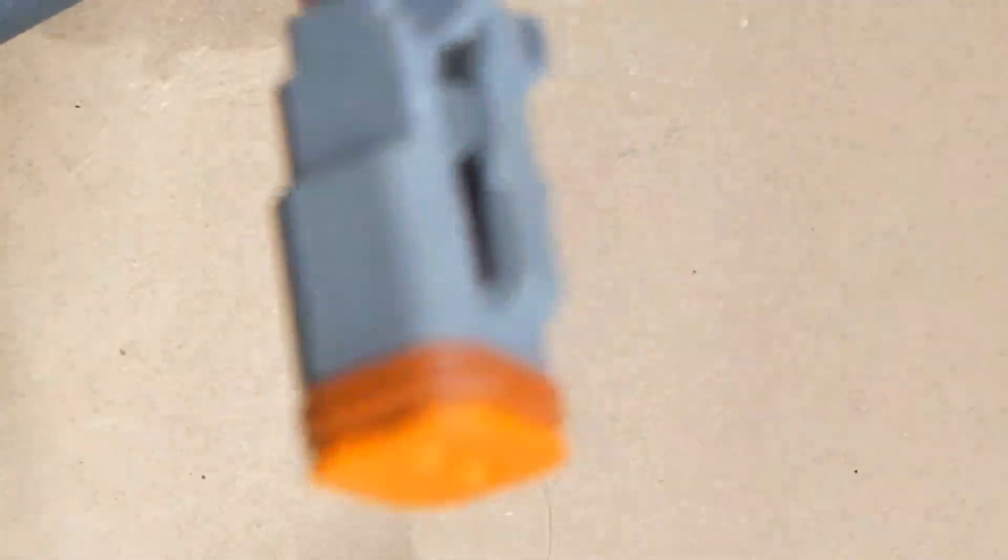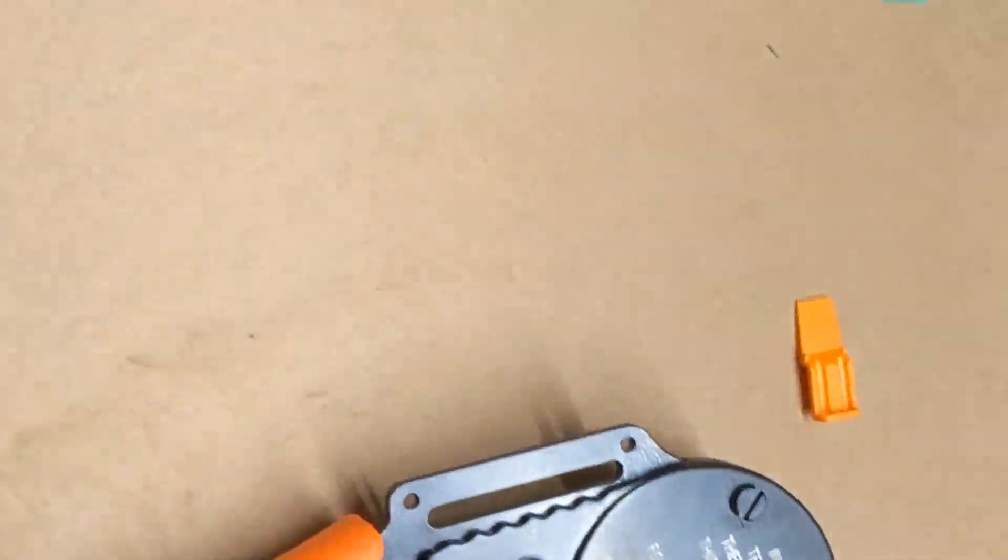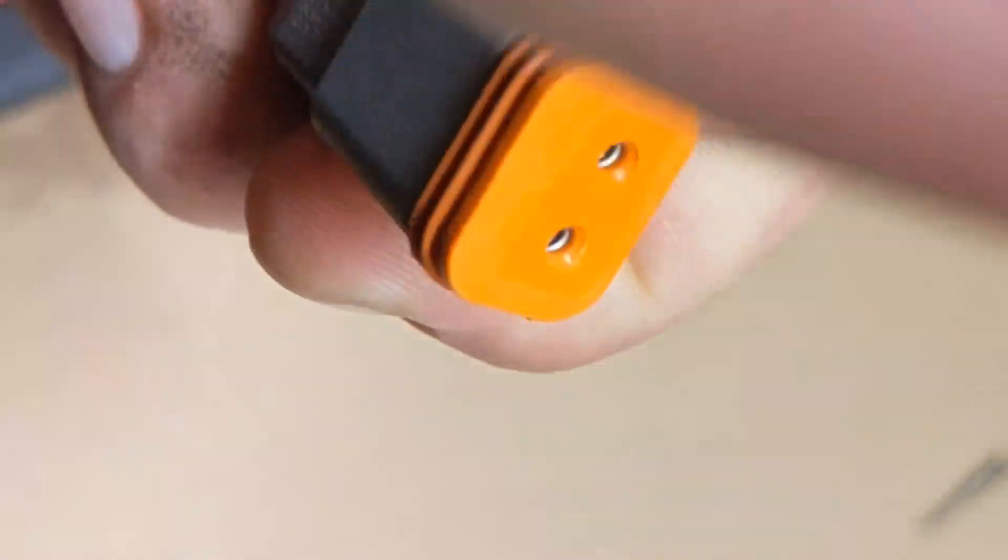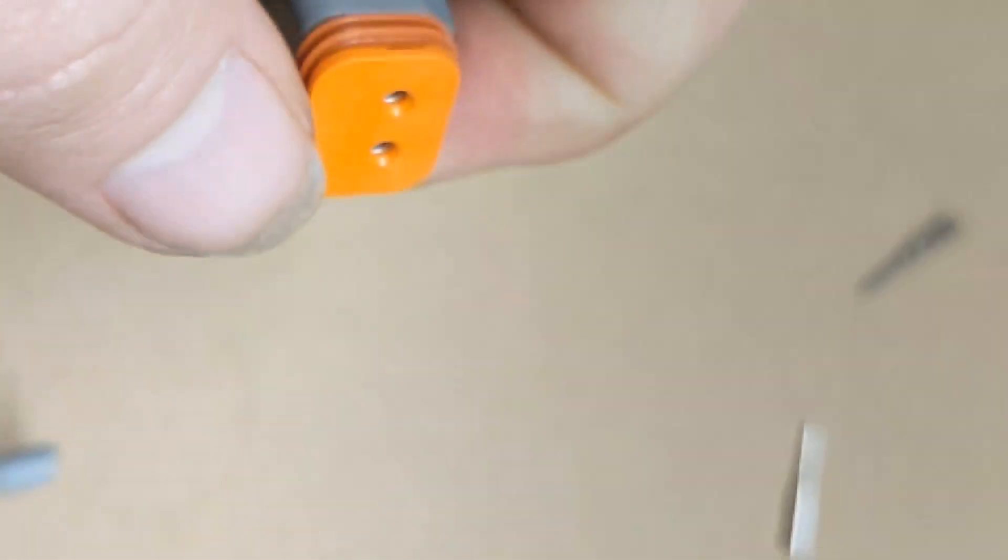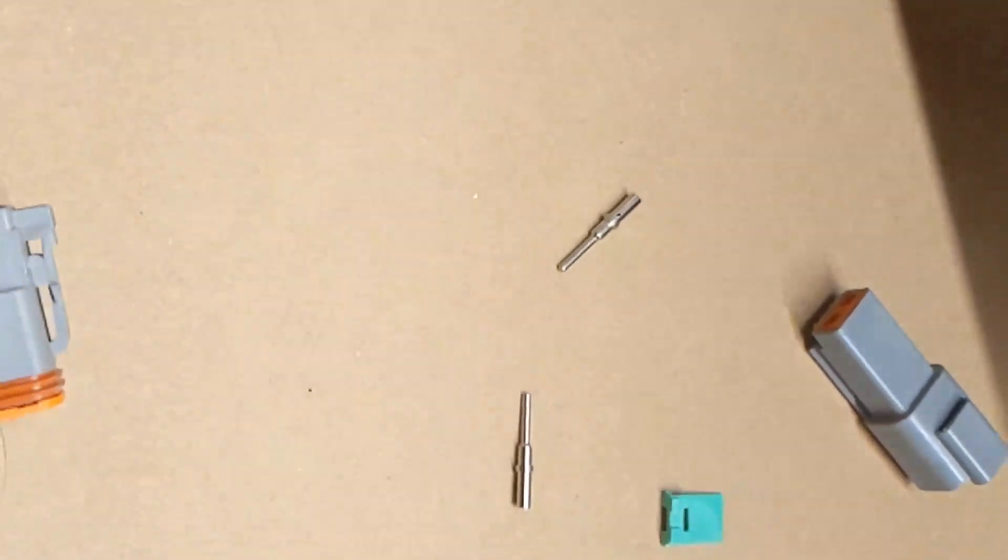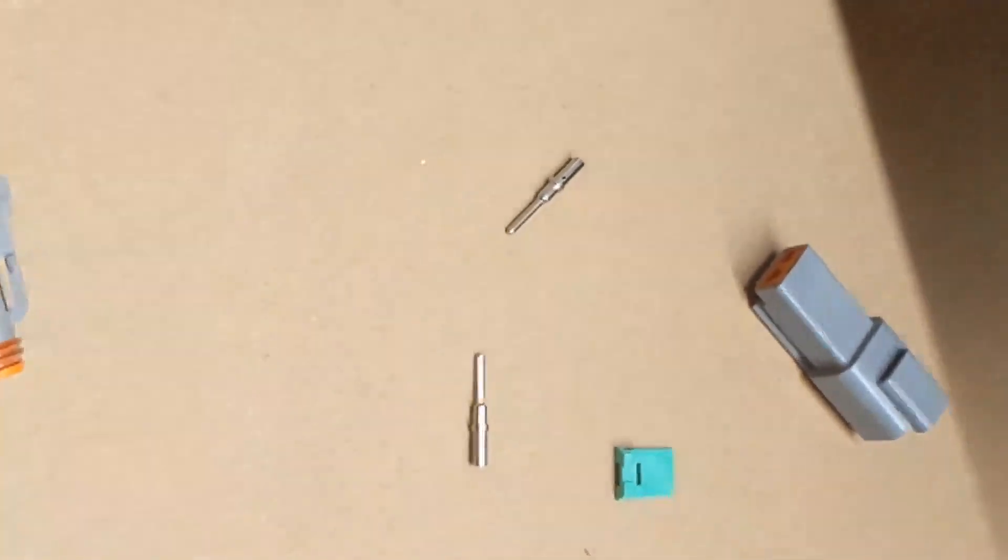But that is how you crimp a Deutsche connector. You basically strip your wire, put your terminal in the crimping tool, crimp it, push it through, and then you put your little plastic locking piece on. Now on the other side you have a slightly smaller locking piece, but again relatively simple. I hope this has been some help, and thank you very much.